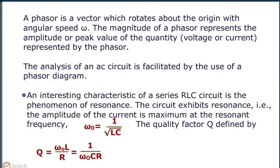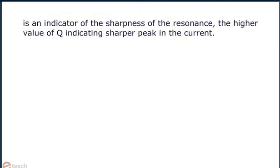An interesting characteristic of a series RLC circuit is the phenomenon of resonance. The circuit exhibits resonance, i.e., the amplitude of the current is maximum at the resonant frequency ω₀ equals 1 by root LC. The quality factor Q, defined by ω₀L by R or 1 by ω₀CR, is an indicator of the sharpness of the resonance. The higher value of Q indicating sharper peak in the current.